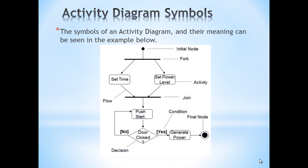Let's do an overview of the symbols involved in the activity diagram. First, there is the initial node—the black circle—which indicates the starting point of the activity diagram. Then there is the fork, which is a black bar used to split the flow of activities into two paths. In this case, the set time activity and the set power level activity are executed in parallel.